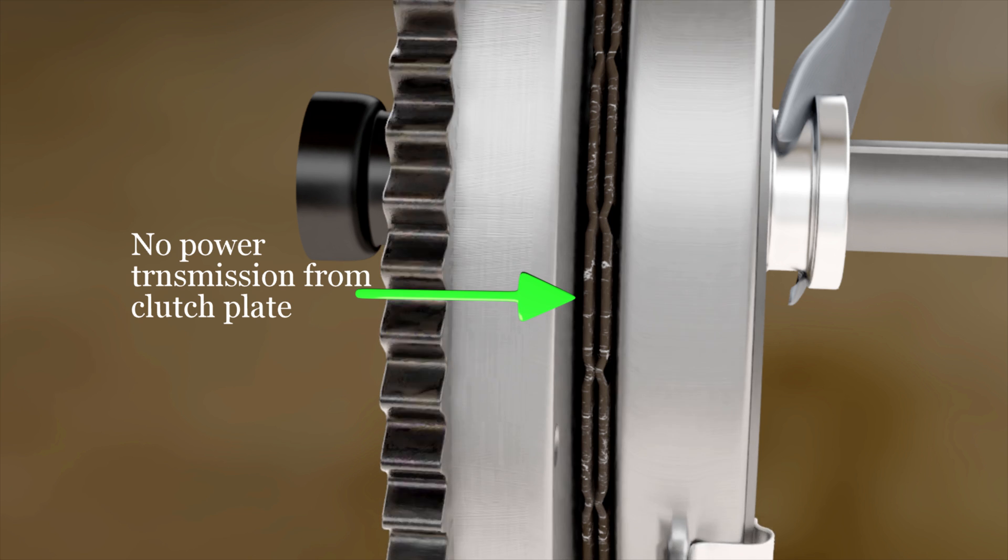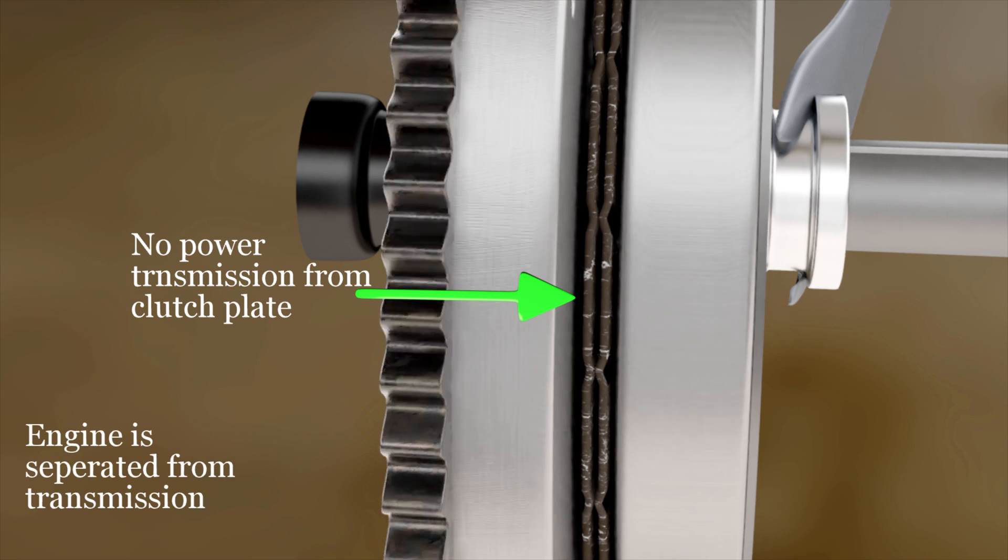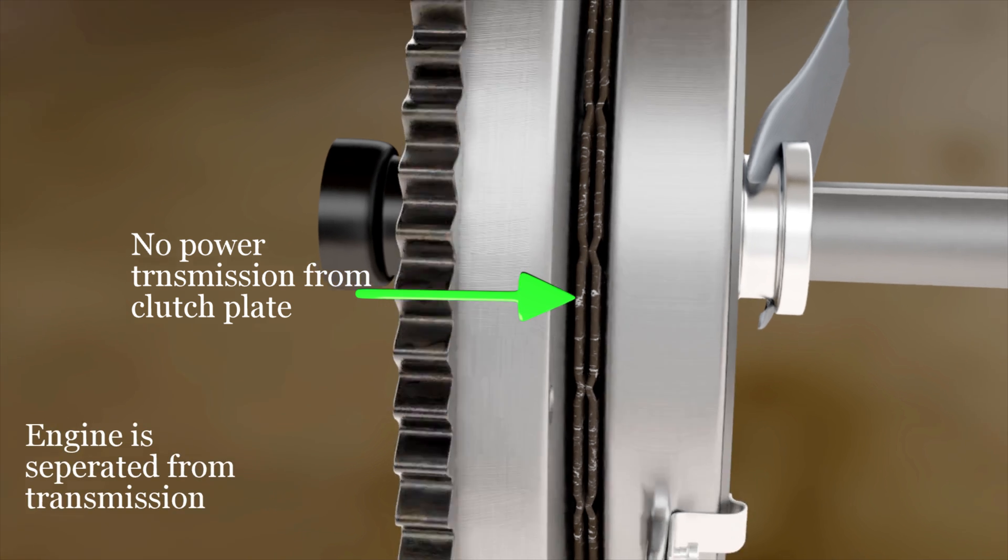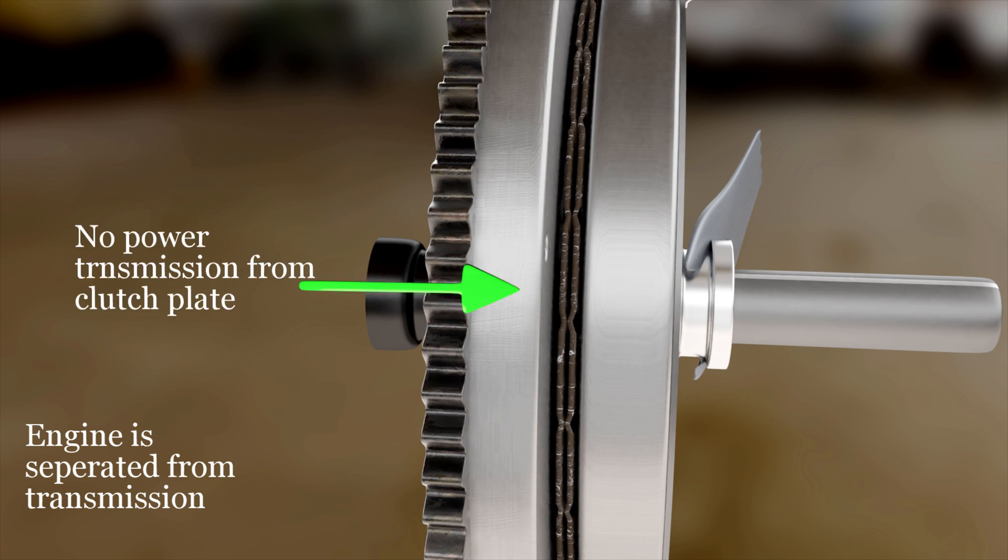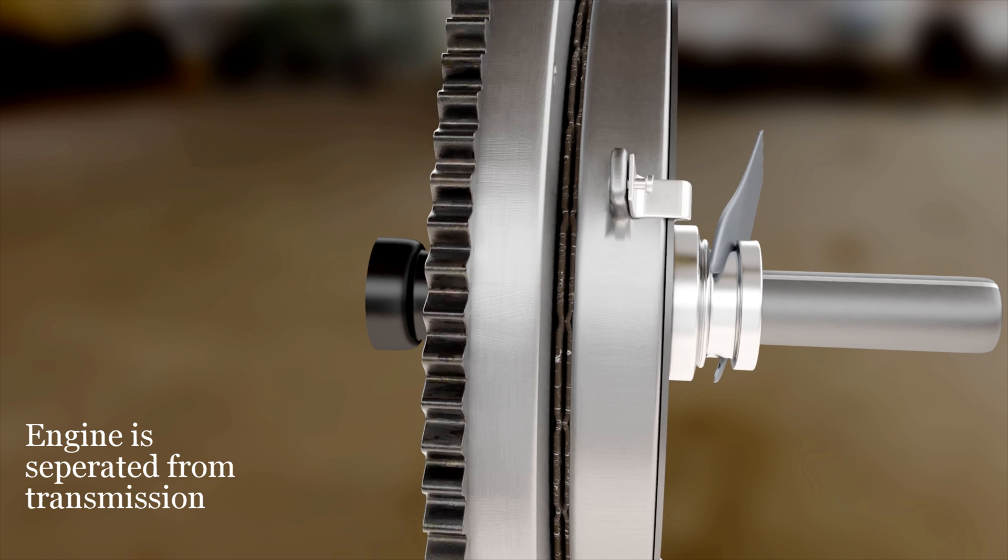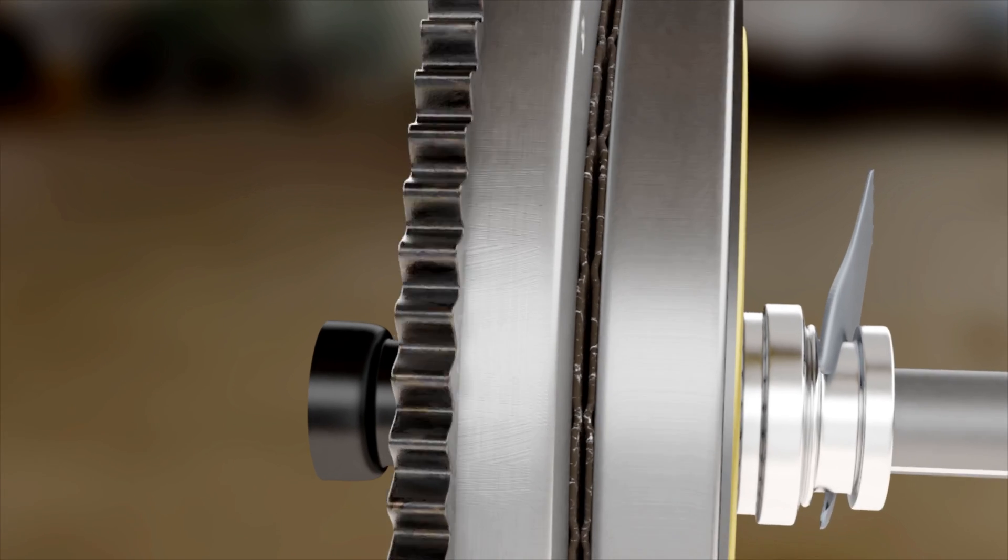And thus, the engine is now separated from the transmission. When the clutch pedal is released, the clutch plate is re-engaged with the flywheel and power starts transmitting again.